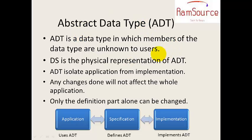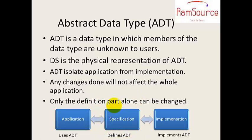Let's talk about everything. Why are we using abstract? The main reason — for example, the definition, the specification, the implementation, and the application. The user can talk about the specification without disturbing the implementation part.